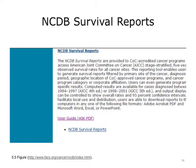Now that we've found additional data on the website for the NCDB Survival Reports, we can determine what options we have in accessing information on cancer survival statistics, as well as what types of file formats we can choose from. From this paragraph on the webpage, we can see that the data is provided in Adobe Acrobat PDF format, as well as Microsoft Word, Excel, or PowerPoint. We can also filter data by the geographical location of the cancer program and the diagnosis timeframe, with a limitation to the time period of patient cases collected: 1994 to 1997 and 1998 to 2001.